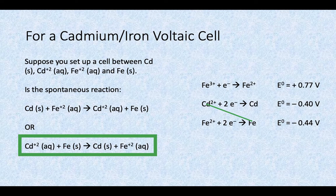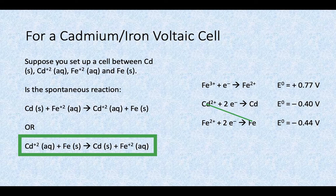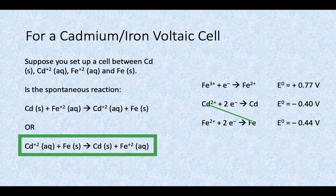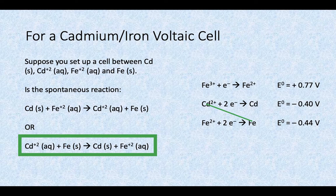When we look at that reaction now that's in that green box, the cadmium is gaining the electrons. It's going from positive 2 down to neutral. It's being reduced, so that's taking place at the cathode.